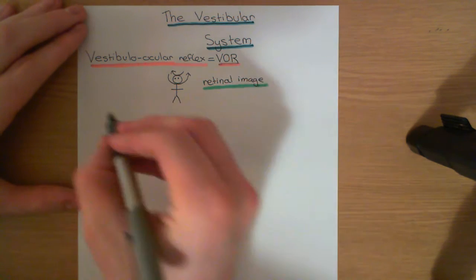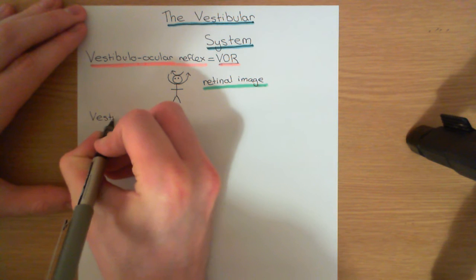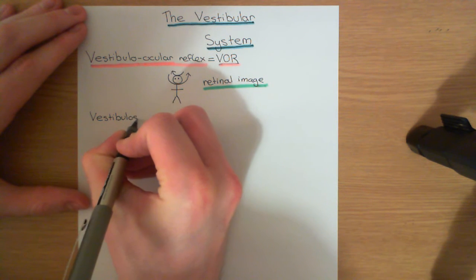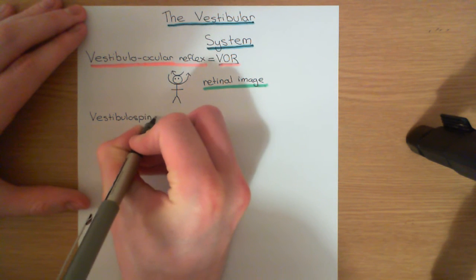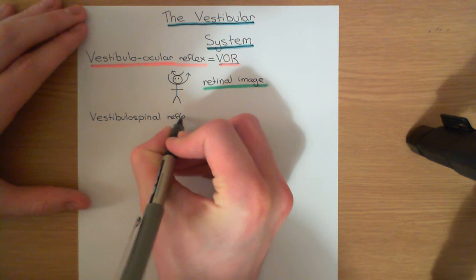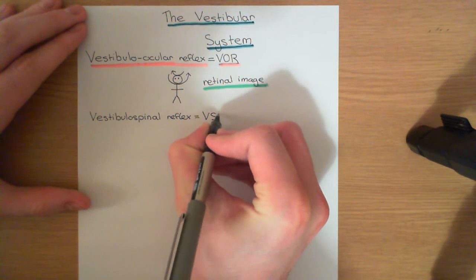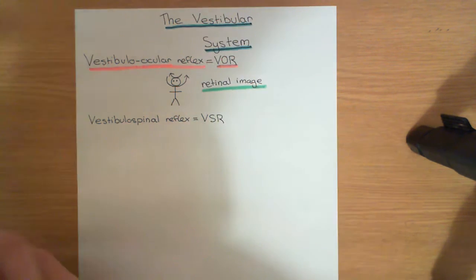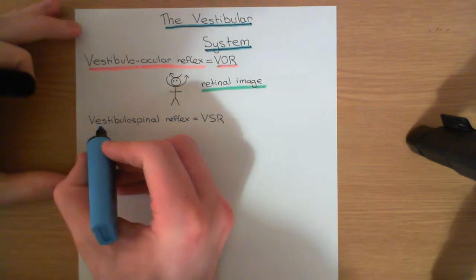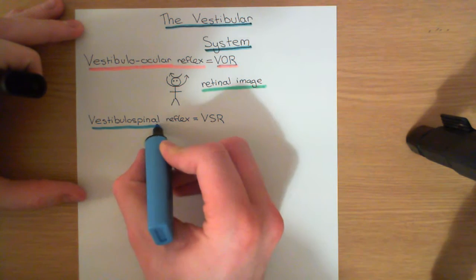Another reflex the vestibular system is involved in is called the vestibulospinal reflex, abbreviated to the VSR. This is clearly a reflex between the vestibular system and the spinal cord. Incidentally, the reason 'vestibulo-ocular' usually has a dash while 'vestibulospinal' doesn't is to avoid the double 'o' that would result from combining 'vestibulo' and 'ocular.'